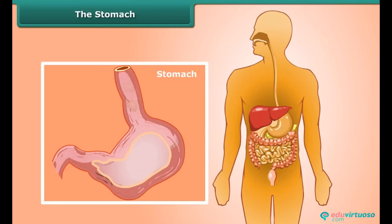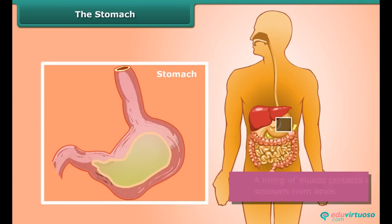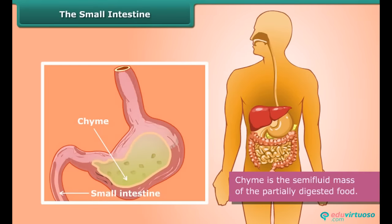The stomach is the widest part of the alimentary canal. It is a thick-walled bag with a flattened U-shape. Inside the stomach, food is churned and mixed with digestive juices including hydrochloric acid. These chemicals break down the proteins into simpler substances. A lining of mucus protects our stomach from acids. After about four hours in the stomach, food changes to chyme and moves into the small intestine.